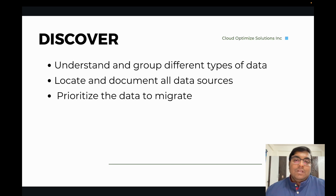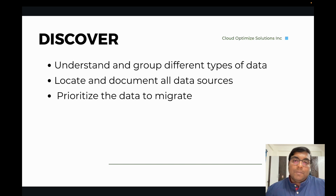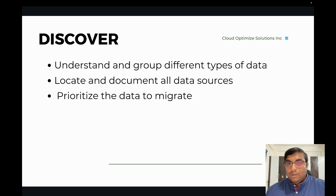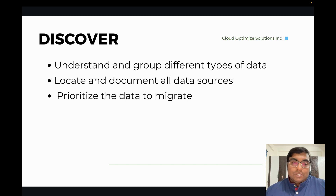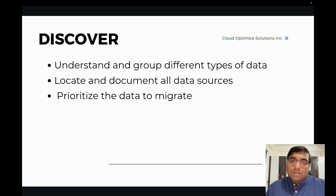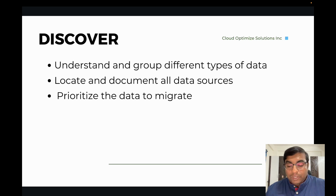For example, client data goes first, then production data goes second — based on the discovery exercise we prioritize. After this step of the framework, you will have a prioritized list of data, the location of the data, and the importance of the data that needs to go into AWS. That gives you an idea of how long it's going to take and what it takes to move the entire data to AWS.